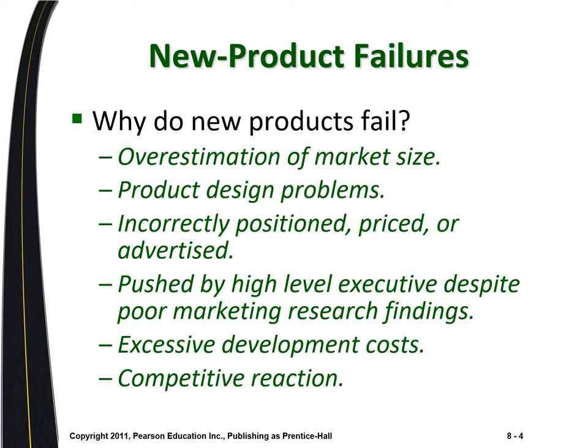A product might be incorrectly positioned — when we talked about market positioning and segmentation, it might not be positioned well. You want to be the low price option, but someone else jumps the gun and offers a lower price. People might like your product but not like the price. Sometimes it's advertised to the wrong market segment. These things happen because you don't have data on the public's reaction to your product, and therefore the likelihood of mistakes is higher.